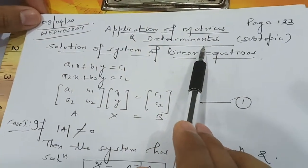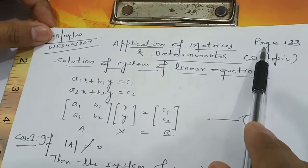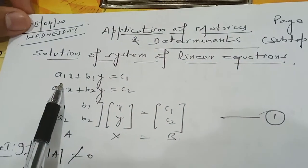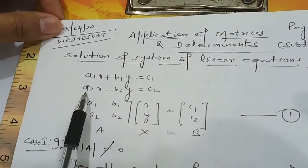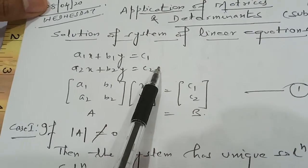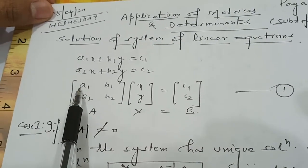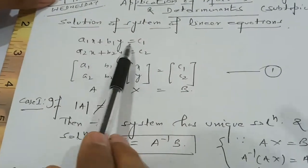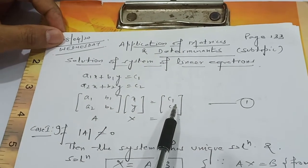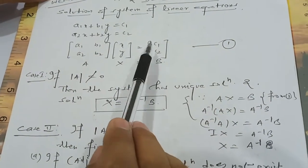Application of matrices and determinants is given on page number 133 in our textbook. Suppose we have a linear equation in two variables: a1x + b1y = c1 and a2x + b2y = c2. This system of linear equations can be written in matrix form as [a1 b1; a2 b2][x; y] = [c1; c2]. Let matrix A be the coefficient matrix, X be the variable matrix, and B be the constant matrix. Let this be equation number 1.